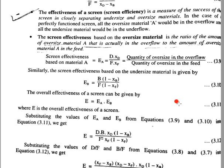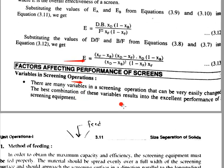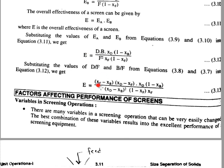Now substituting the values of D/F and B/F from equations 3.7 and 3.8 into equation 3.12, we can find both values. So D/F and B/F are substituted, giving: E = ((xF − xB) × xD) / ((xD − xF) × xD × (1 − xB)) × (xD − xB)² / ((1 − xF) × xF).